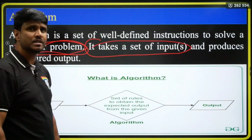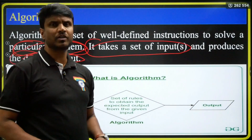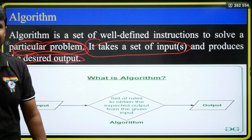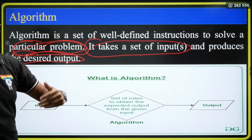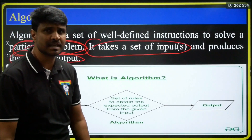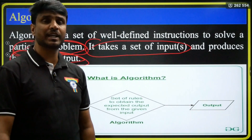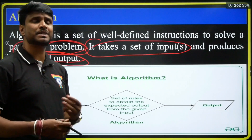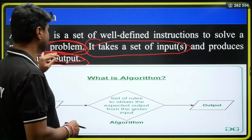This algorithm is going to take a set of inputs, and based on that it is going to give a desired output. Sometimes it will give a wrong output — it is not a desired output. That is why we have to use the word 'desired output.'